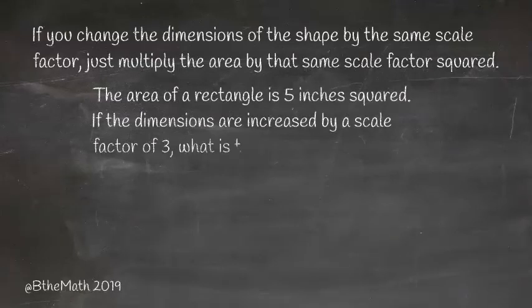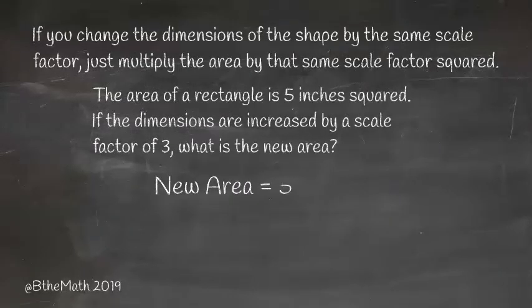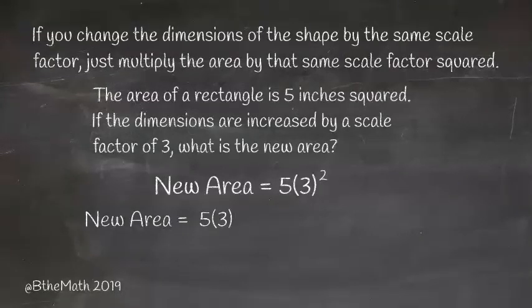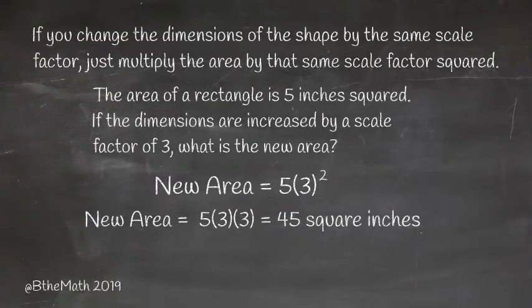The area of a rectangle is 5 inches, and the new dimension is increased by a scale factor of 3. The new area would be 5 times 3 squared, which is the same as 5 times 3 times 3, which is 45 square inches or 45 inches squared.